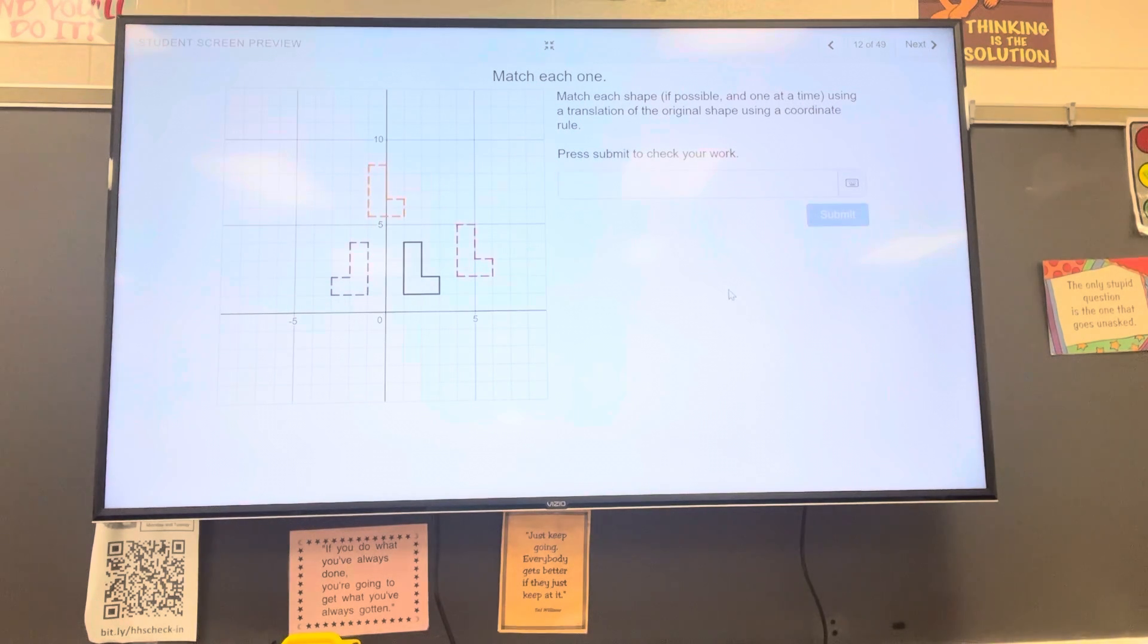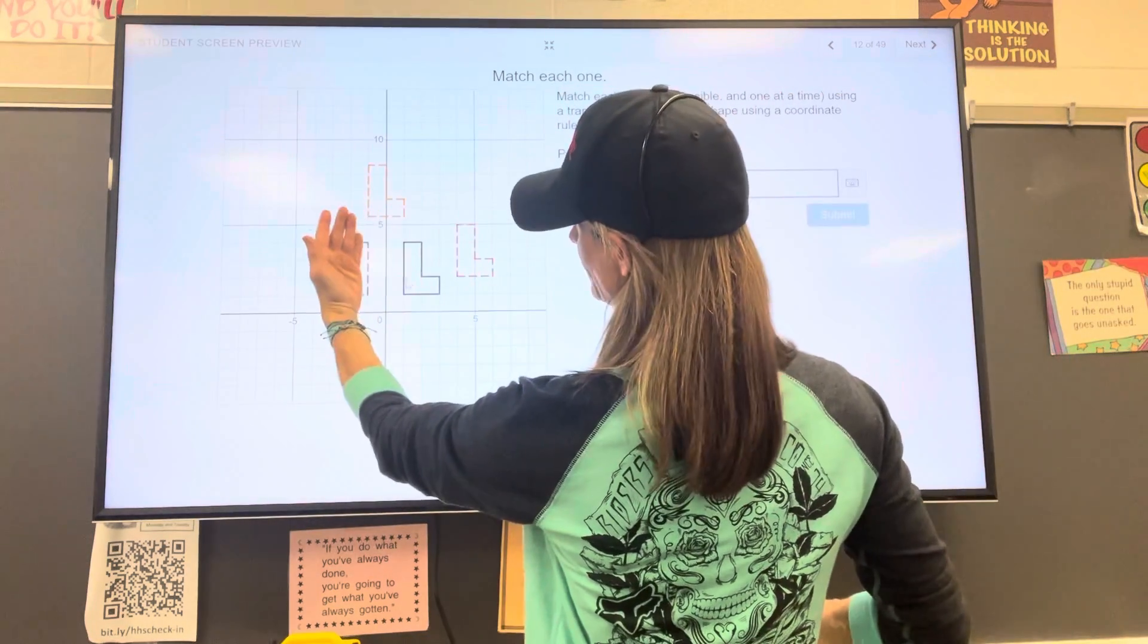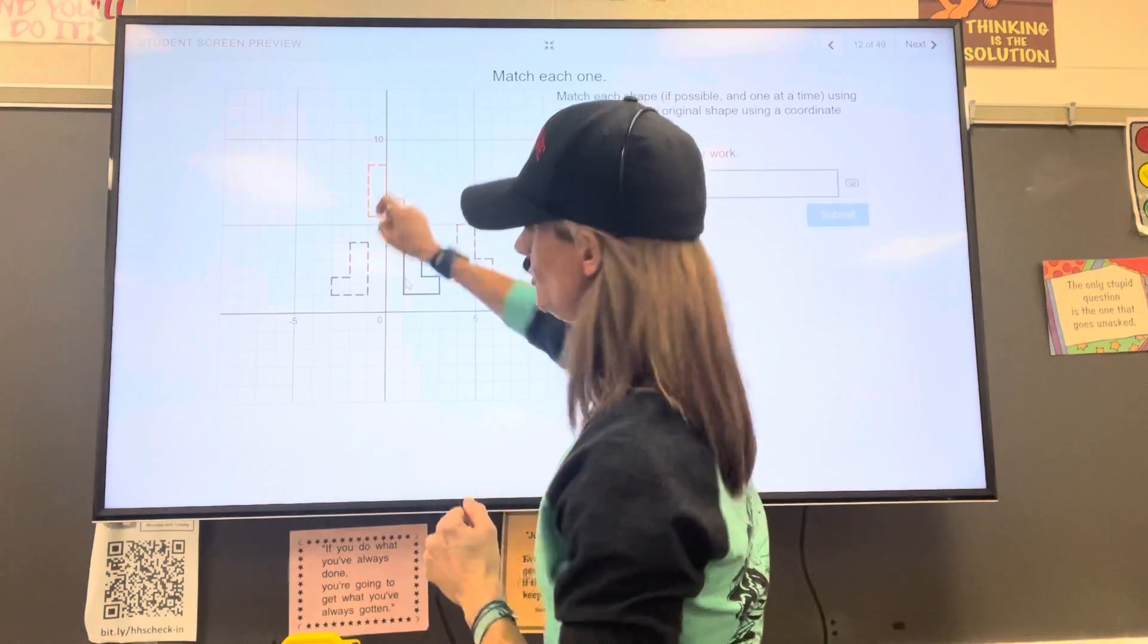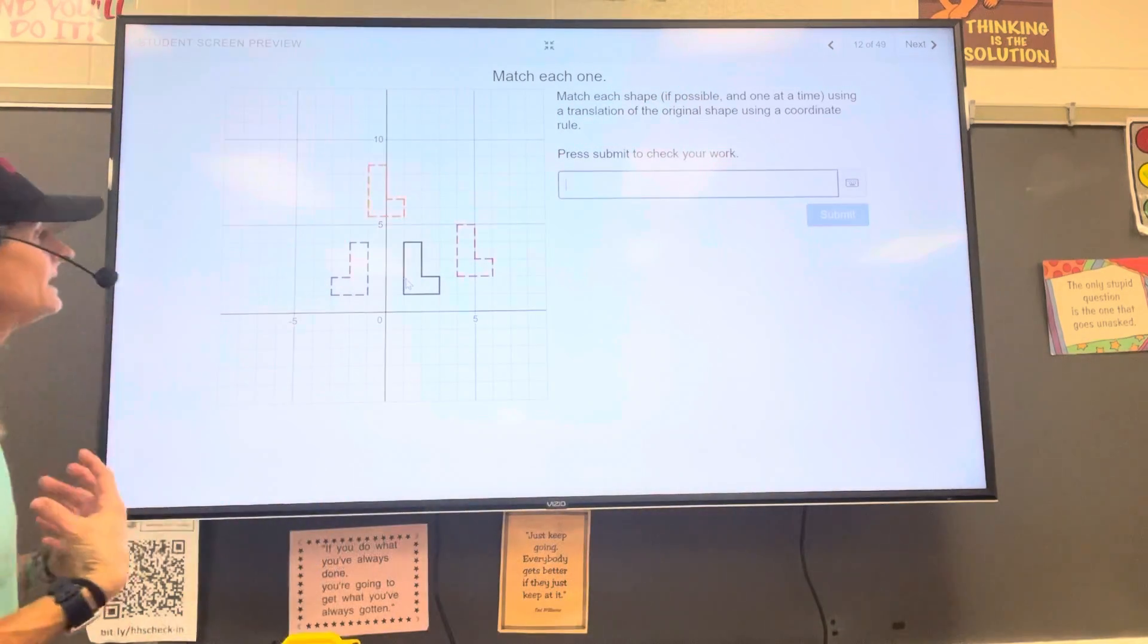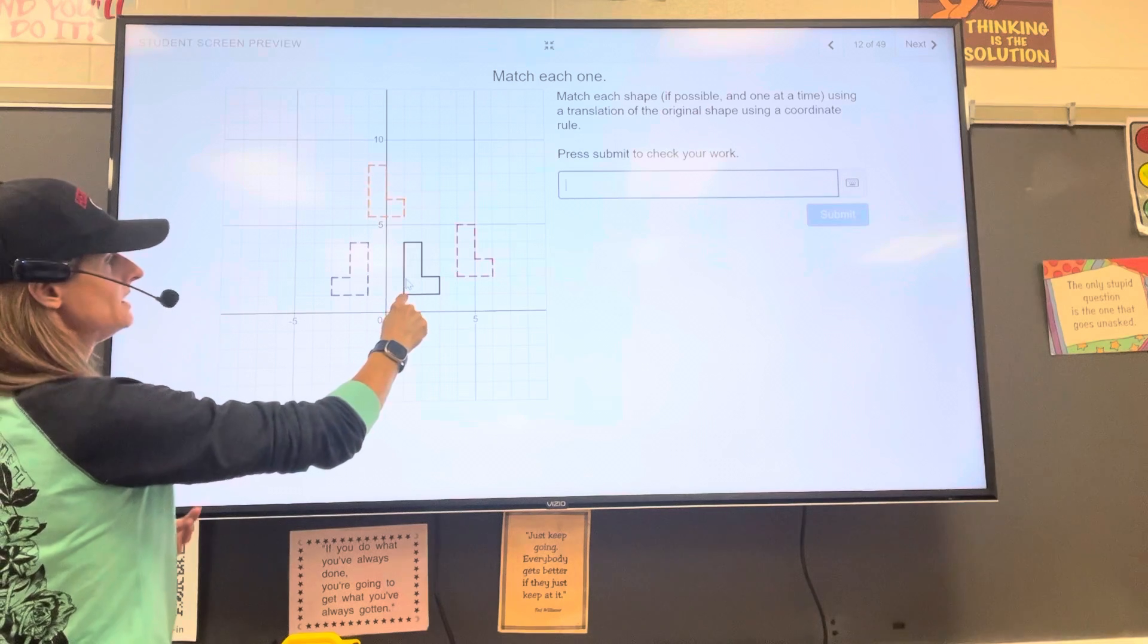Match each shape using a translation of the original shape using the coordinate rule. Okay, so we're just going to do one of these. Clearly the purple shape is a reflection, which we are going to be doing next class. So we're not going to match the purple shape, but let's say I wanted to match the yellow shape.